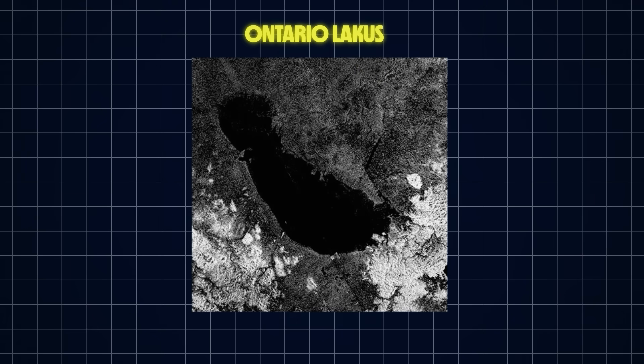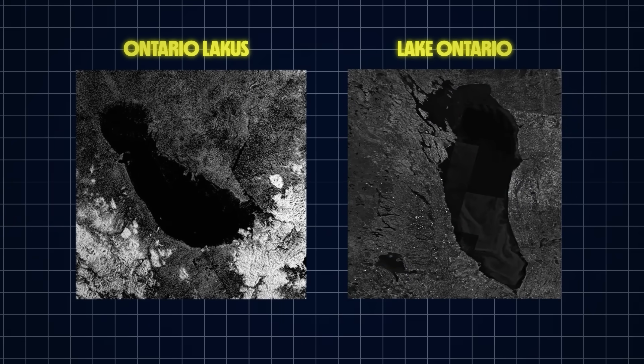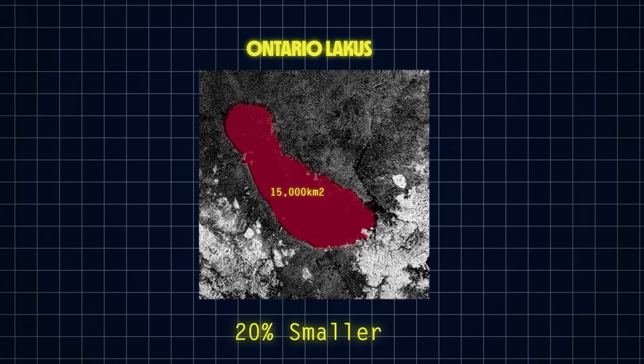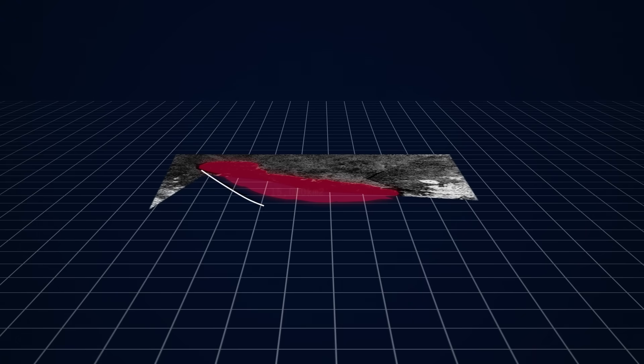It's called Ontario Lacus, named after Lake Ontario in North America, because the two have a nearly identical shape, only the one on Titan is about 20% smaller, but it still covers about 15,000 square kilometers. Even though the lake is pretty big, it's actually still relatively shallow, with the average depth between 40 centimeters and 3 meters.